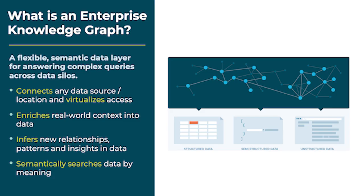This becomes really powerful when combined with data sources that are continuously being updated. One way knowledge graphs can access data is through virtualization. Virtualization means no copying or persisting of data you already have stored, but instead enables a knowledge graph to query those data sources where they live, with the addition of the contextual layer added by the knowledge graph.